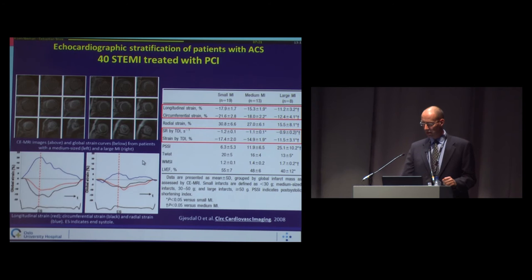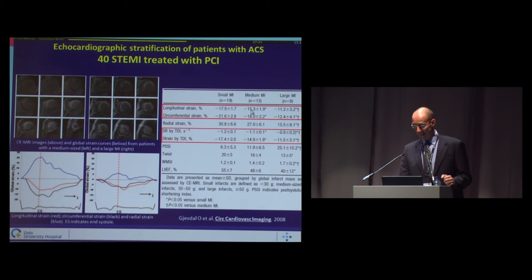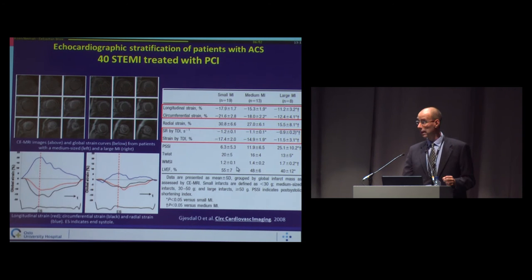The table shows the three groups of patients with large, medium-sized, and small infarction. Longitudinal and circumferential strain could not only differentiate between large and medium-sized infarction, but also between medium and small-sized infarction. It is therefore a sensitive method — more sensitive than ejection fraction, wall motion score index, twist, or post-systolic shortening.